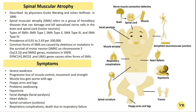Different types of SMA have been observed. Type 1, also known as Werdnig-Hoffmann disease, is the most common and severe form, accounting for about 50-60% of all cases. Type 2 SMA represents approximately 20-30% of cases. Type 3, also known as Kugelberg-Welander disease, accounts for about 10-20% of cases. Type 4 is an adult-onset form of SMA and represents a small percentage of overall cases.